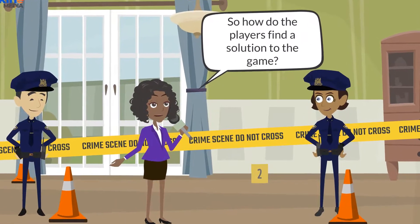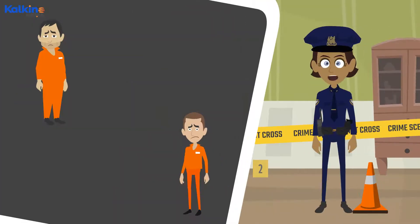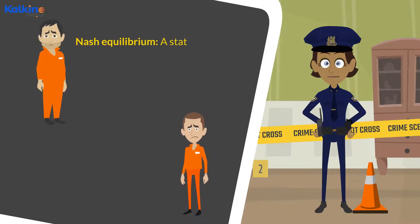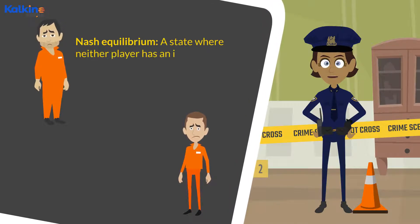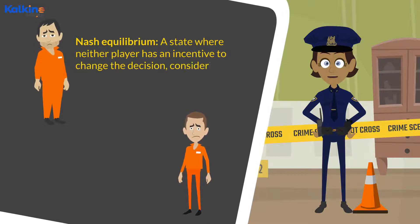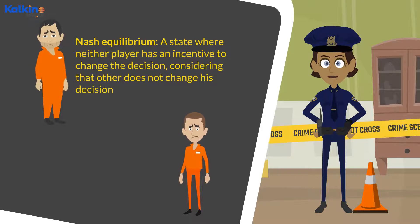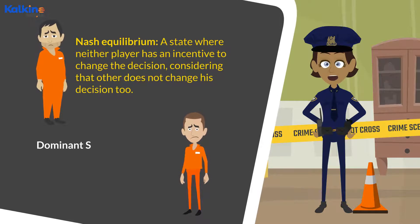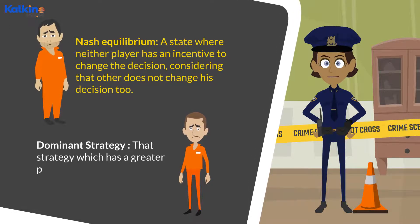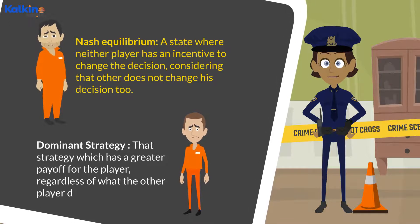How do the players find a solution to the game? Nash equilibrium represents a state where neither player has an incentive to change their decision, considering that the other does not change their decision too. Dominant strategy refers to that strategy which has a greater payoff for the player, regardless of what the other player does.